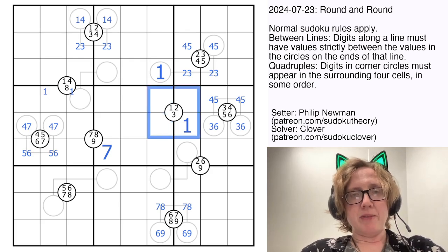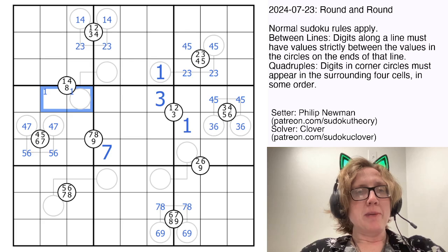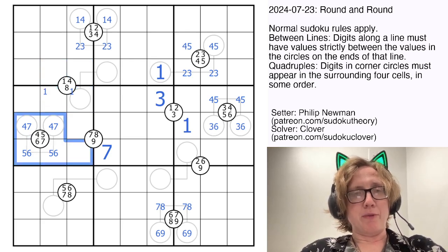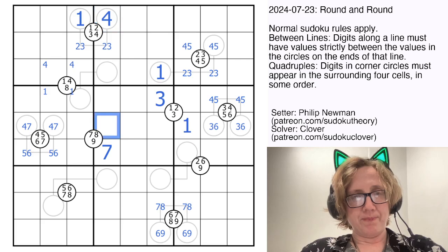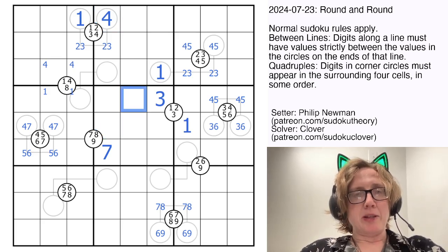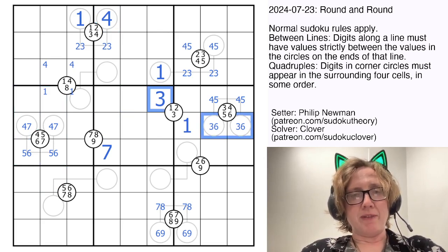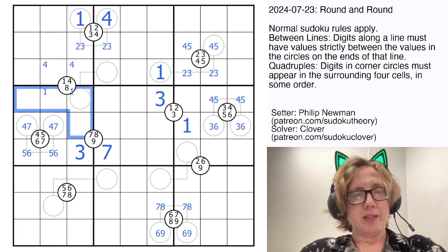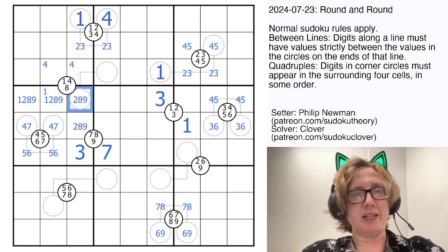And we also need to place a 3 around this quadruple. It can't go in these cells because of the 3, 6 pair, so it goes right there. 4 around this quadruple can't go in these cells because there's a 4 in the region, so it goes in one of these, and that makes this a 1, and makes this a 4. We need to place a 3 in this region, and there are 3s already in row 4 and row 5, so 3 must go here. So the remaining cells in the region are filled with 1, 2, 8, and 9. So that's not a 1, and that's not a 1 because of the 1 right there.